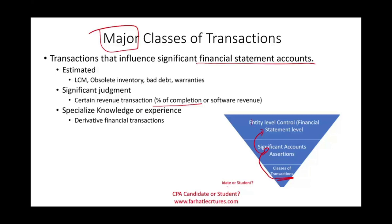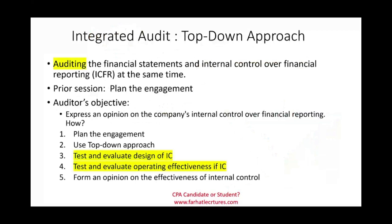So notice: transactions create accounts, accounts flow to the financial statements, and entity-level controls sit at the top — if they are weak, everything flows down. This is what we mean by the top-down approach: it starts at the top and flows down. You should now go to Farhat Lectures and work multiple choice questions. In the next session we will look at testing and evaluating the design and operating effectiveness of internal control. Study hard, good luck, stay safe — the CPA exam is worth it; invest in yourself.